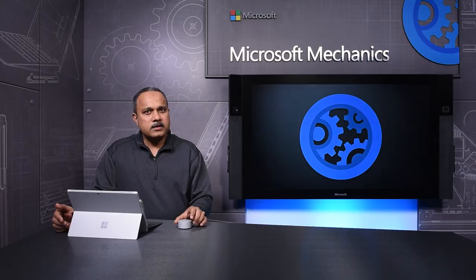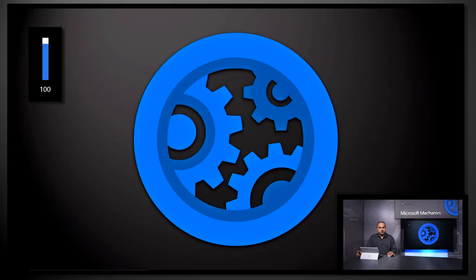Surface Dial can be used off-screen with any current Windows 10 device that supports Bluetooth. Let me illustrate this on my Surface Pro 4. By default, Surface Dial becomes my volume control and mute button.